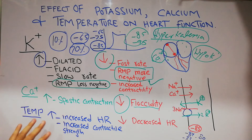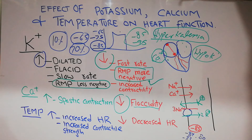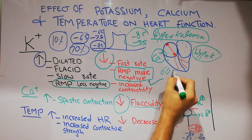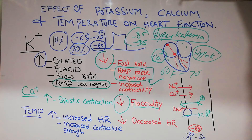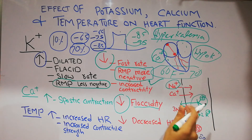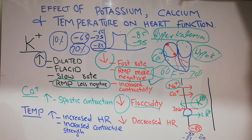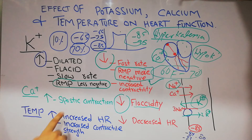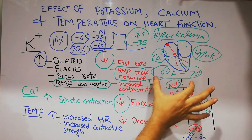Regarding the effects of temperature on the human heart: if the temperature of the human body is increased, it will lead to increased heart rate and increased contractile strength. This is because increasing temperature leads to increased permeability of ions — sodium, potassium, and calcium — across the membrane. Since heart rate and contractile strength are dependent on these ions, higher permeability due to higher temperature increases both.